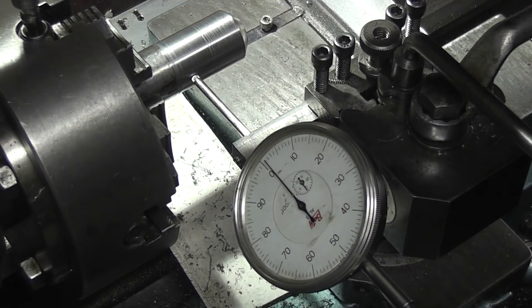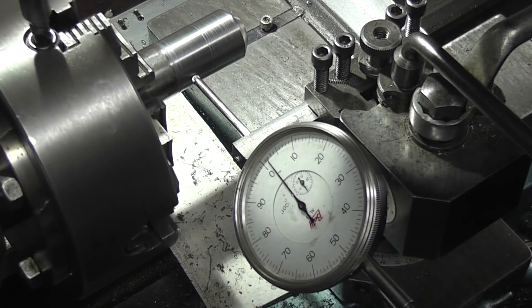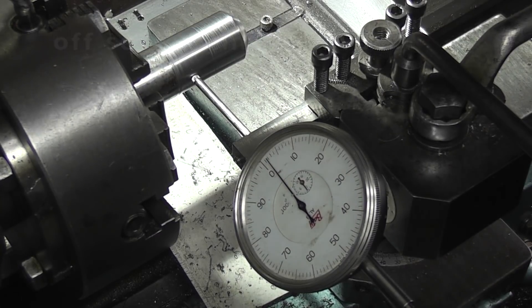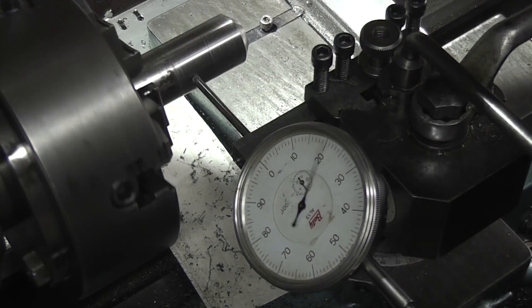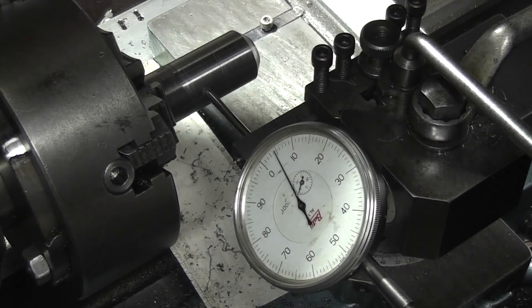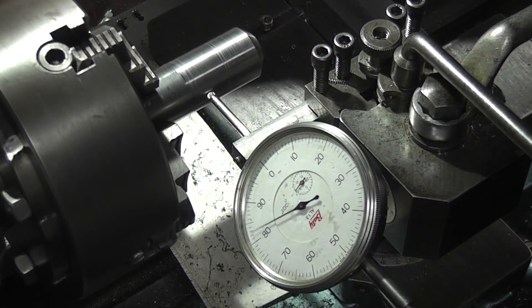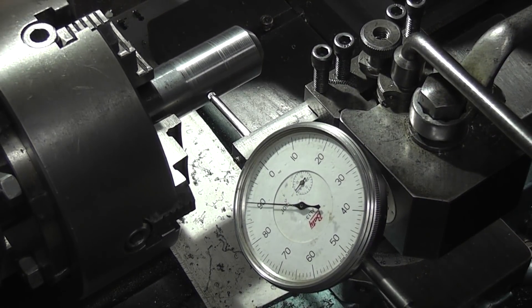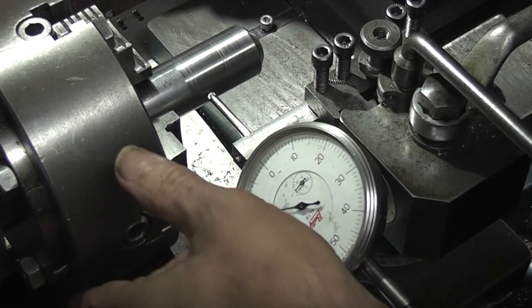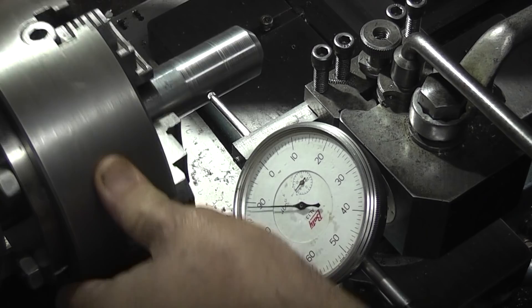So center to center was 295 thou, so when you're turning it round you're doubling that so it should be just on the 600. One, two, three, four, five, so that's 10 thou under 600, she's right. I'll need to do now is tighten the jaws.